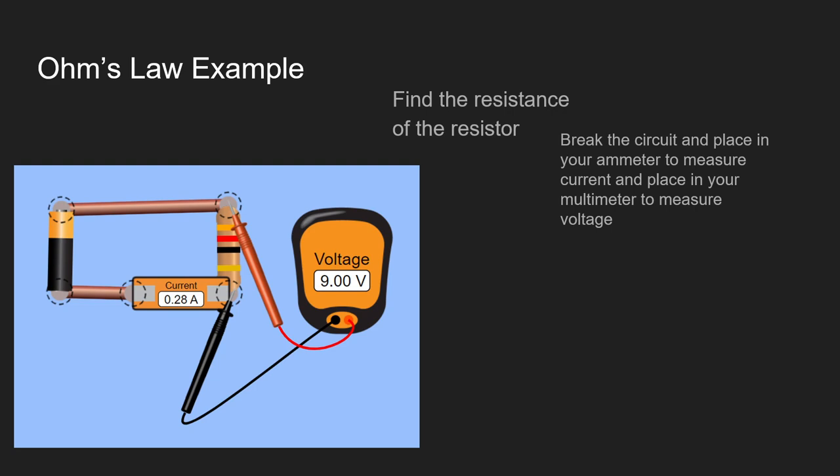So first we are going to break the circuit and place in the ammeter in order to get the current that is going through the system. After we do that we will then place in the multimeter and our probes in the correct position in order to get the voltage.